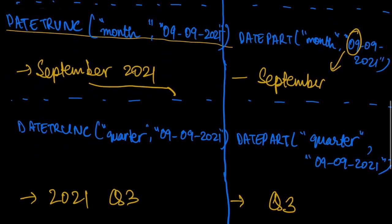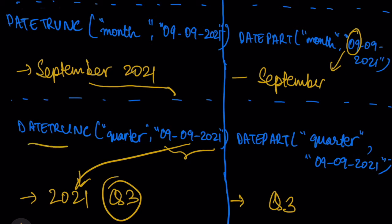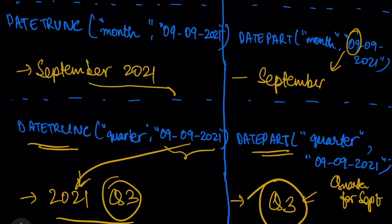Finally, when you do DATE_TRUNC with 'quarter' for this particular date, what is returned is 2021 Quarter 3, because September falls in Quarter 3. So Tableau returns both the quarter and the year, giving a greater level of detail. Whereas with DATE_PART for quarter, what is returned is just Quarter 3 — only the quarter number, without the year.